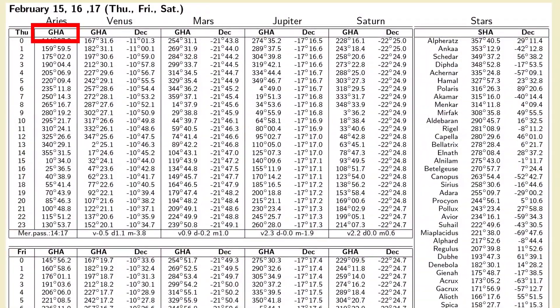But for all the stars, we're instead given this table with SHA, or sidereal hour angle. So what's the difference?